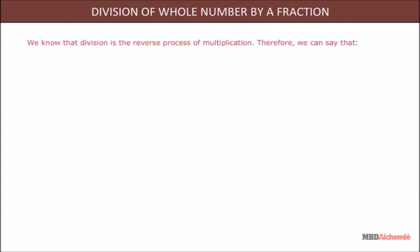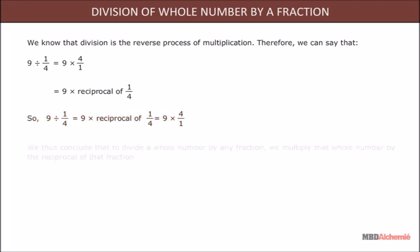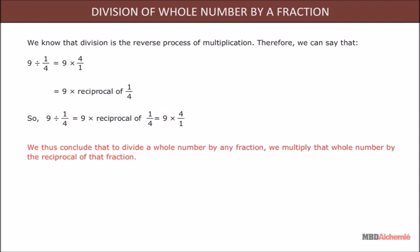Division of a whole number by a fraction: division is the reverse process of multiplication. Therefore, 9 ÷ 1/4 = 9 × 4/1 = 9 × reciprocal of 1/4. To divide a whole number by any fraction, we multiply that whole number by the reciprocal of that fraction. For example, 7 ÷ 2/3 = 7 × 3/2 = 21/2.